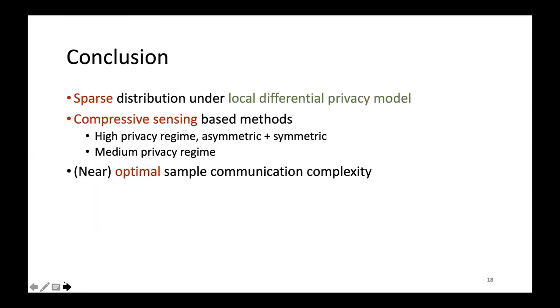To summarize, in this paper, we study sparse distribution estimation in the local differential privacy model. We propose compressive sensing-based methods. For high privacy regime, we provide asymmetric and symmetric schemes, both of which achieve optimal sample and communication complexity. We also extend compressive privatization to medium privacy regime, and obtain near-optimal sample complexity under privacy and communication constraints.